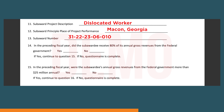Fourteen, in the preceding fiscal year, did the subawardee receive 80% of its annual gross revenues from the federal government? Yes or no? If yes, continue to question fifteen. If no, the questionnaire is complete.